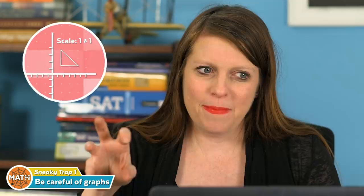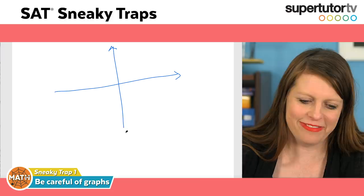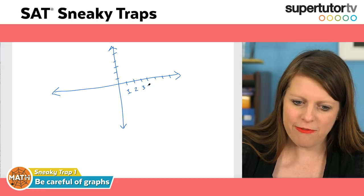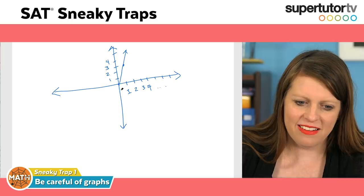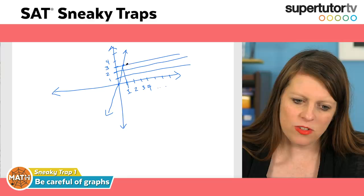Sneaky trap number one is in the multiple-choice math section: graph scaling. This was on the October 2019 SAT and I've seen it on a couple of other exams recently. The College Board will use a graph that is not scaled one-to-one. On a normal Cartesian plane, each tick mark equals one — one, two, three, four — and if you have a point and need to find the slope of a line, a lot of students just count the boxes.